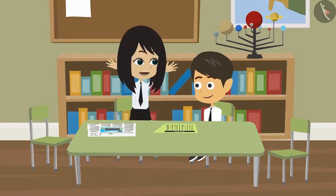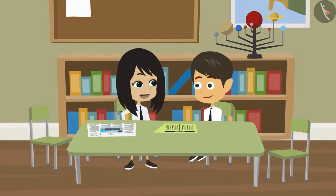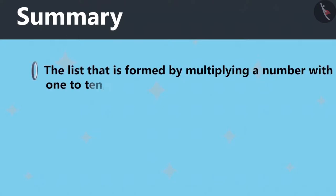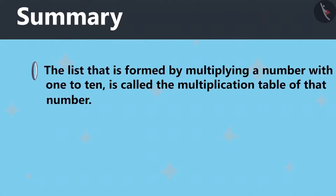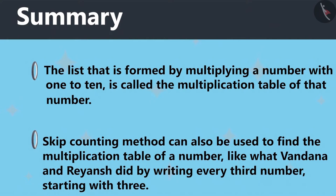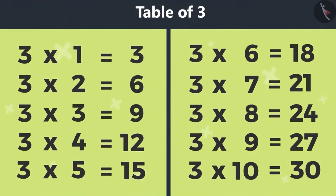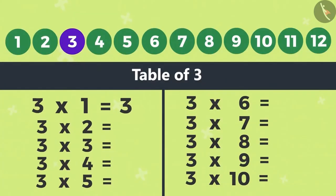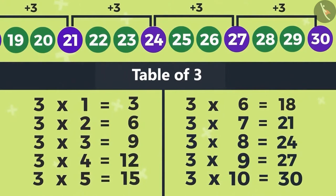This is very interesting. This way anyone can remember the Multiplication of 3. Today we've learned that the list that is formed by multiplying a number with 1 to 10 is called the Multiplication Table of that number. And Skip Counting Method can also be used to find the Multiplication Table of a number, like what Vandana and Rayanj did by writing every third number starting with 3.